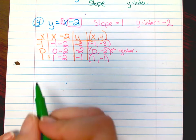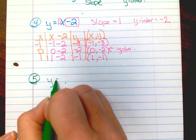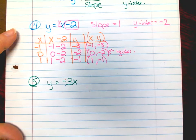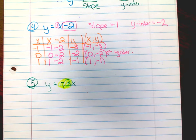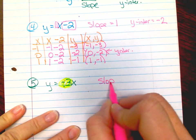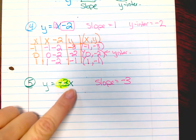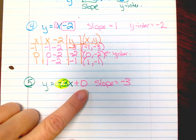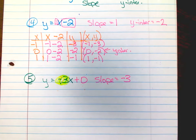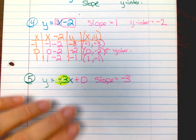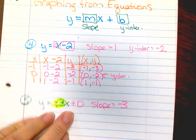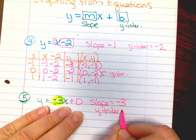Number five: y equals negative three x. Back to our formula — the number beside my x is my slope. But you're like, well, there's no b. Just because there's a zero there, we don't have to put the zero every time, but you can put it there if you need to see it in your formula. So your y-intercept equals zero.